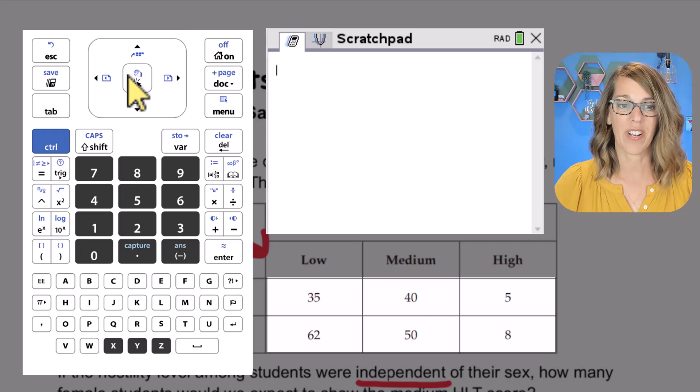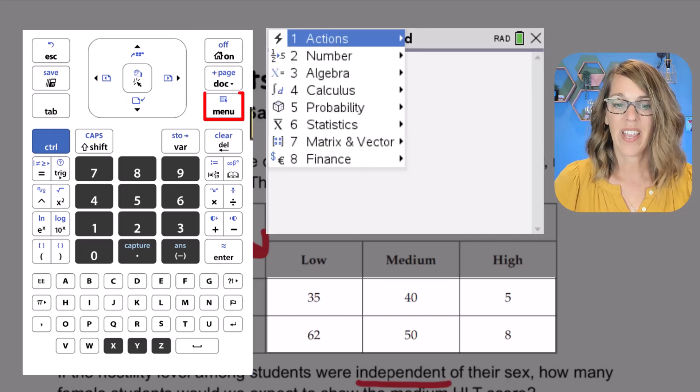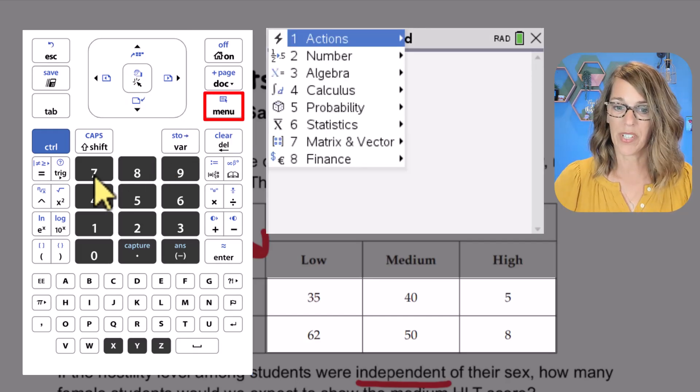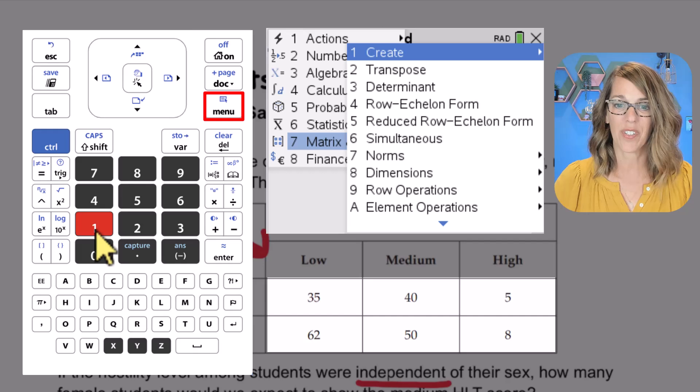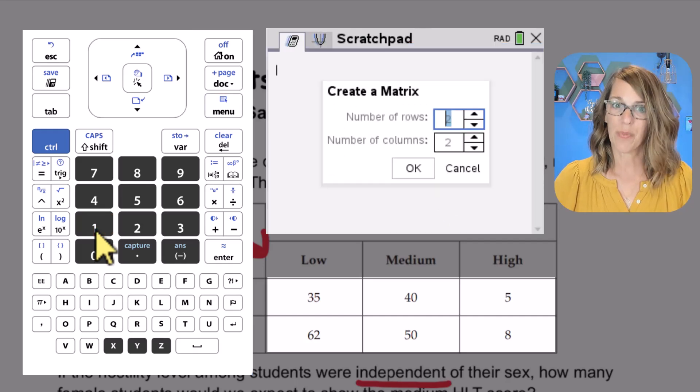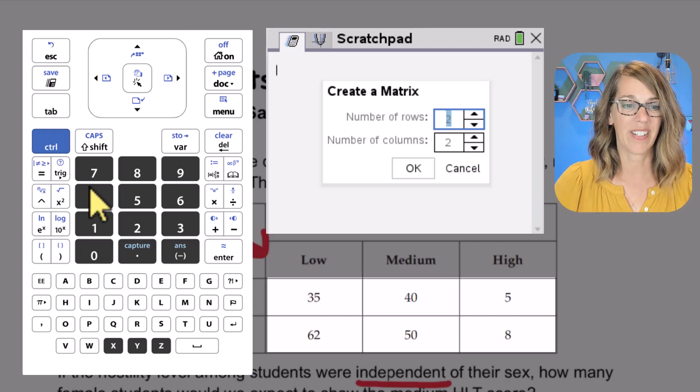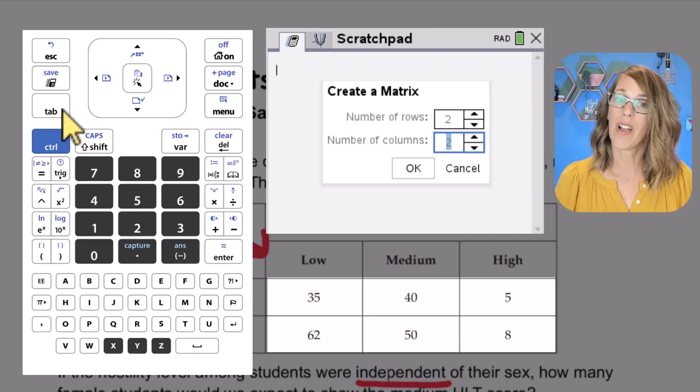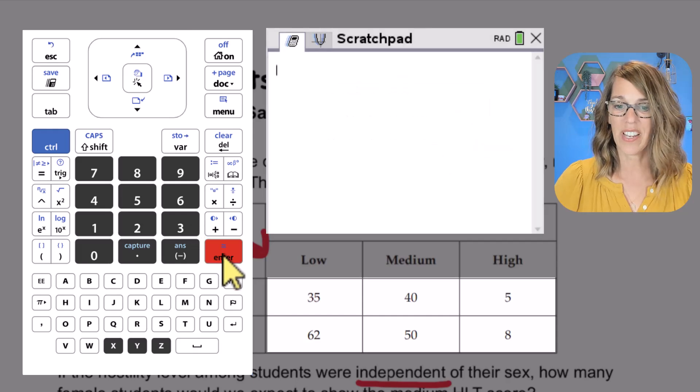I want to enter a matrix. So we're going to go to menu, I want matrix which is number seven, then create a matrix which is number one, matrix which is number one again. It asks how many rows, and I do have two rows. That's perfect. Let's tab to the number of columns. I've got three columns here, so let's choose three and then enter.